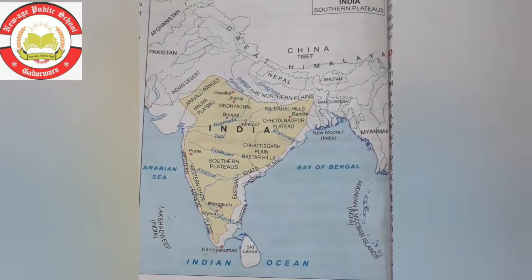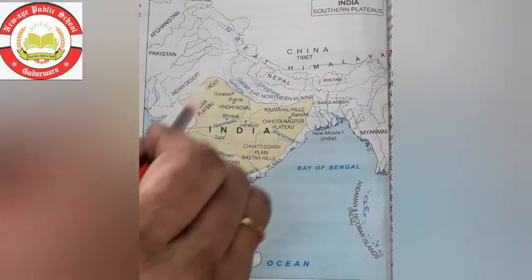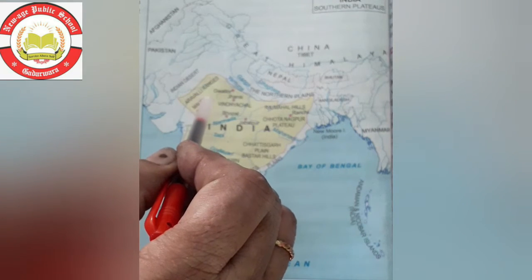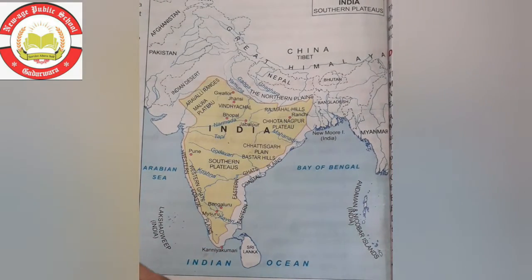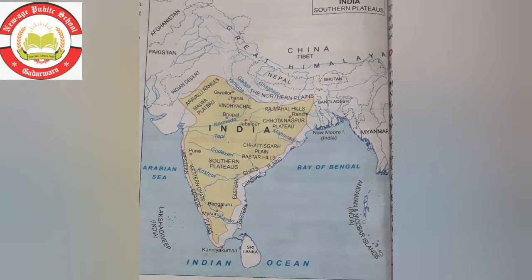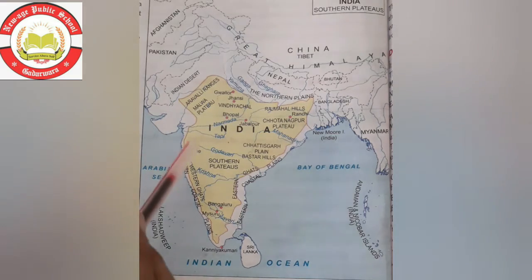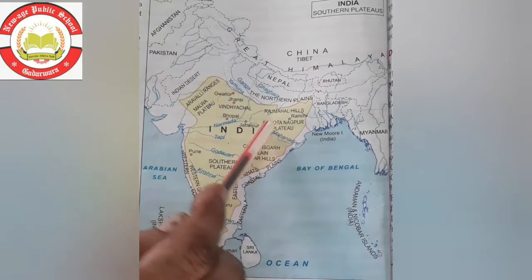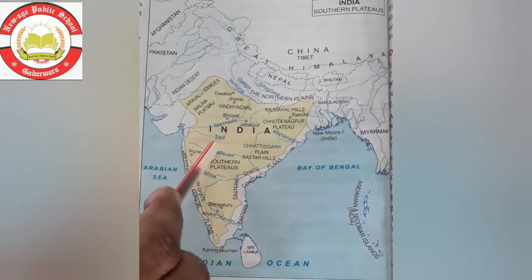The Central Highland consists of two parts: the Malwa Plateau and Chota Nagpur. The Malwa Plateau is in the north-west and lies between the Aravali and Vindhya Hills. The slope is north-west, and some rivers join the Ganga and Yamuna. The soil of the Malwa Plateau is very fertile. Cotton and oilseeds are the main crops. Next is Chota Nagpur, which is the other part of the Central Highland.